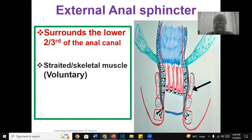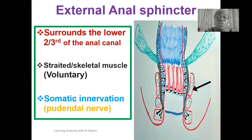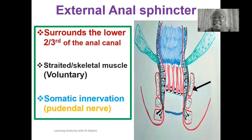The external anal sphincter is responsible for the control experienced when feces is almost releasing but we can still hold it, because it is a voluntary sphincter. It is innervated by the pudendal nerve, which is a somatic type of innervation. Note that the internal anal sphincter has autonomic innervation because it is smooth muscle, while the external is striated muscle under voluntary control.